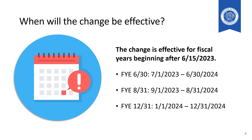Many of the local governments in the state of Washington have a fiscal year end of December 31st. So this change will be effective when you're reporting to us for January 1st, 2024 through December 31st, 2024.